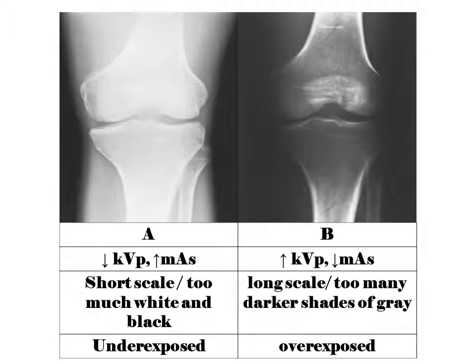We have two sets of radiographs. Radiograph A results from low KVP and high MAS — the resultant image shows short scale, or too much white and black, which is underexposed. Radiograph B results from increased KVP and low MAS — the resultant image shows long scale, or too many darker shades of gray, which is overexposed.